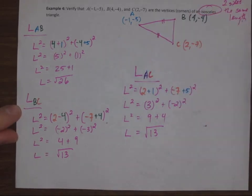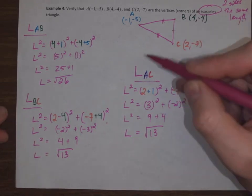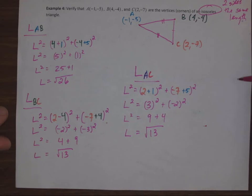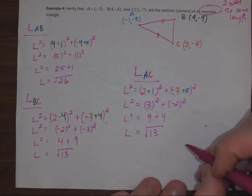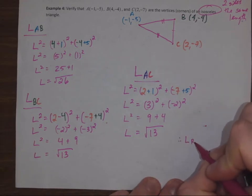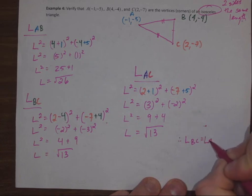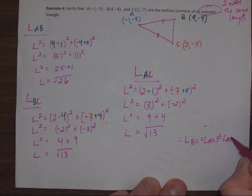and BC are the same. AB has a different length, so we do in fact have an isosceles triangle to verify. Length BC equals length of AC, and those do not equal the length of AB.